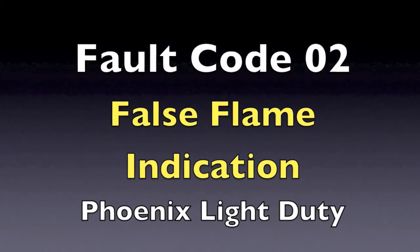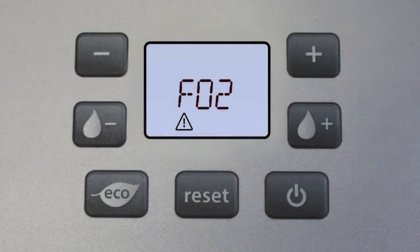F02, false flame indication. The control senses a flame signal when there is no heat demand.